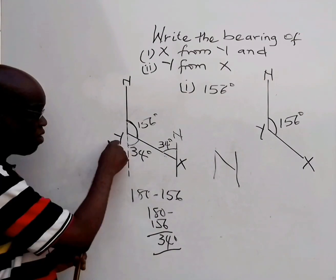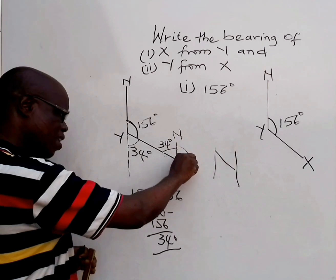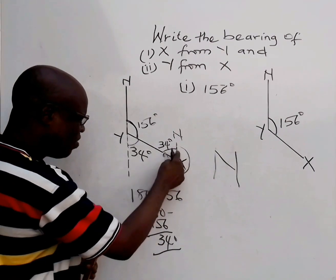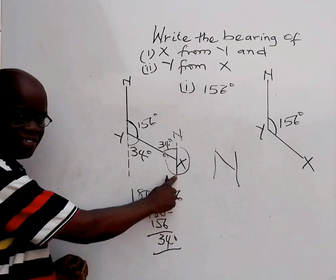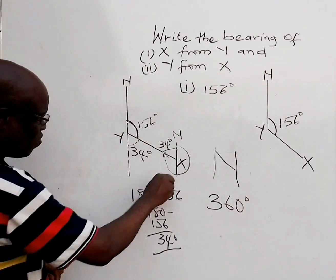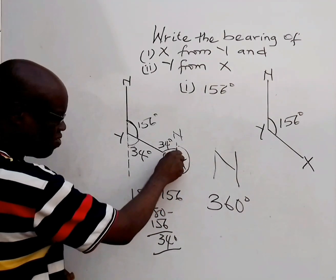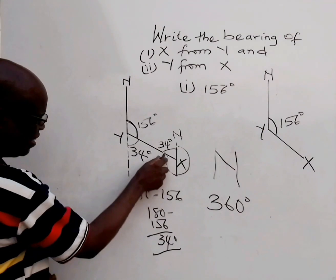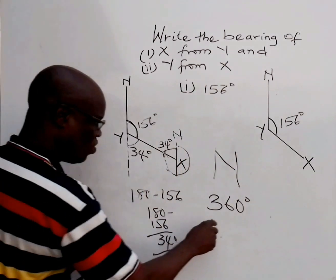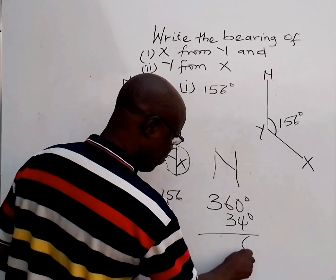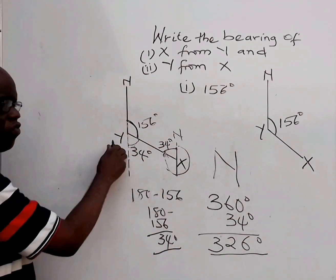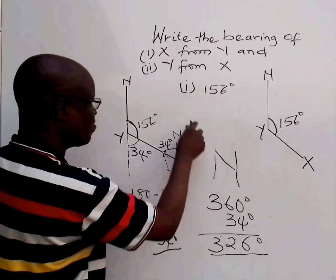Now, since you have gotten that, this is the bearing of Y from X. The bearing is from here to this place. From here to here is 180, and from here to this place is also 180, making 360. But this is not up to 360 because it remains 34 degrees before you get to 360. So remove that 34: 360 minus 34 equals 326. The bearing of Y from X is 326 degrees.